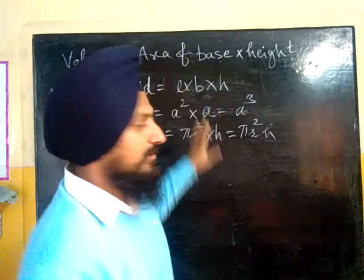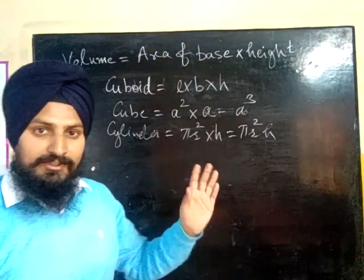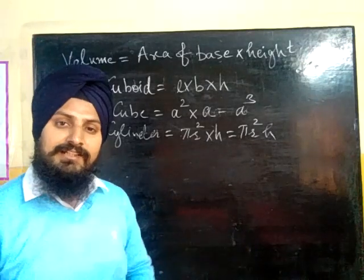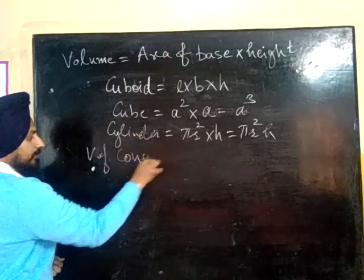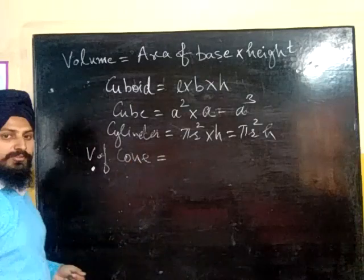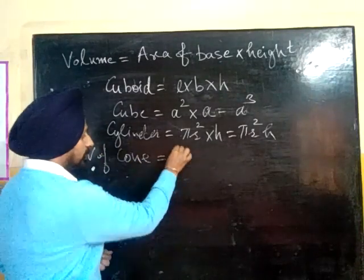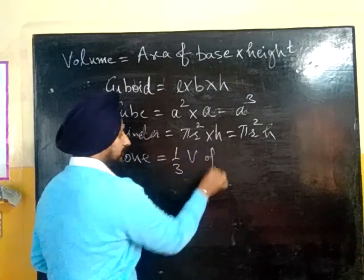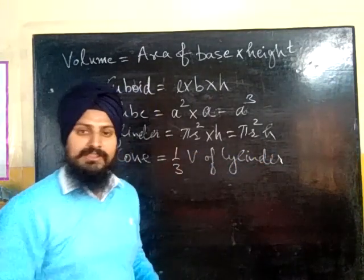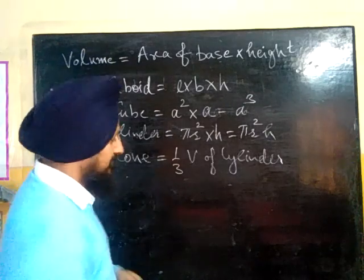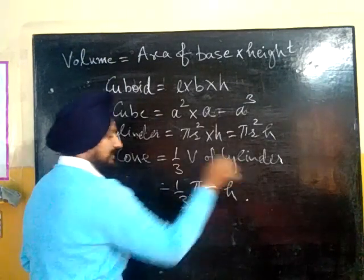We have now learned the volumes of cube, cuboid, and cylinder. Now the fourth one is related to the cylinder — the volume of cone. The volume of cone is equal to one third the volume of the cylinder. So we can say the volume of cone is one-third pi r squared h.